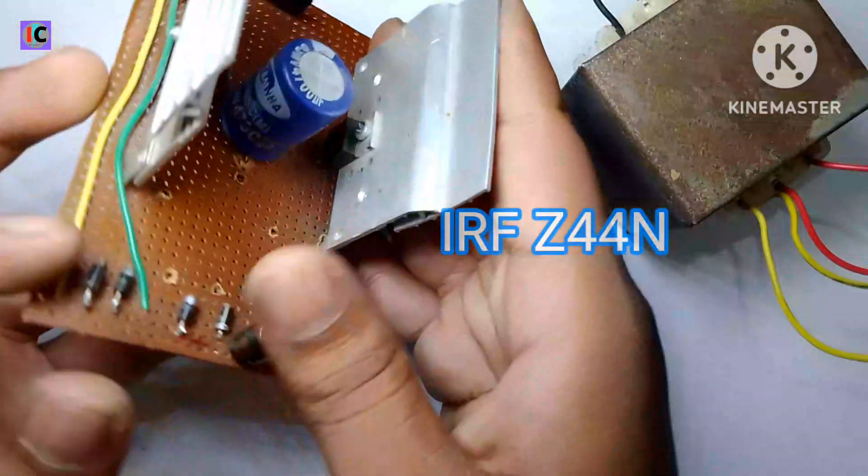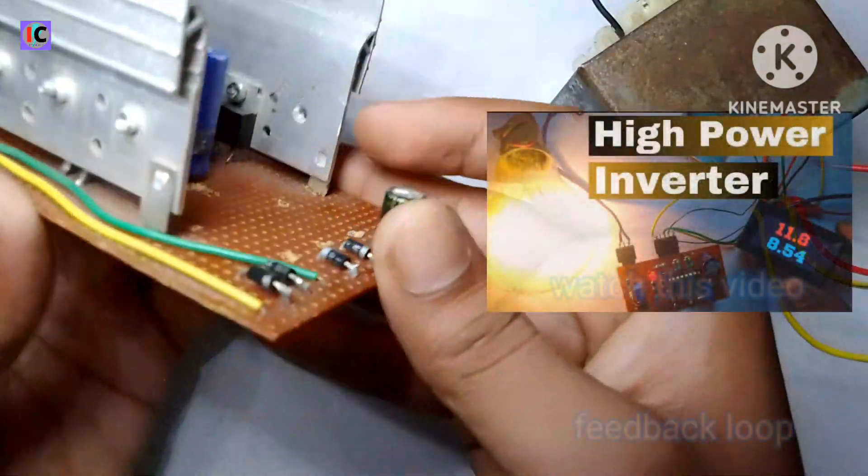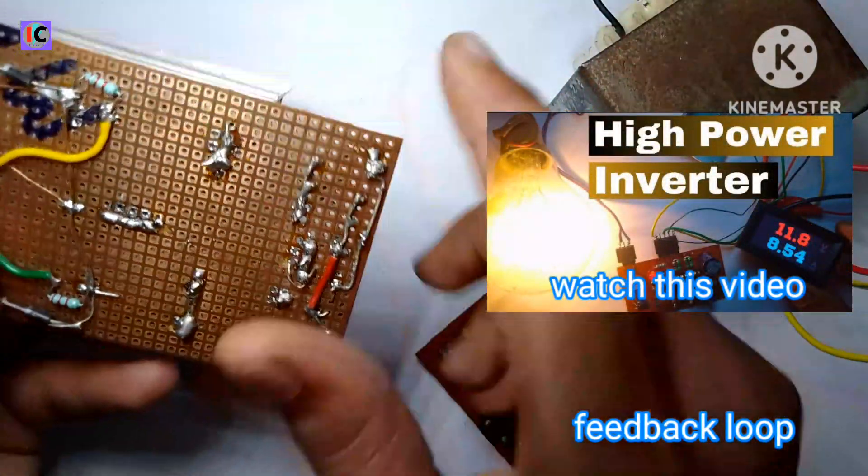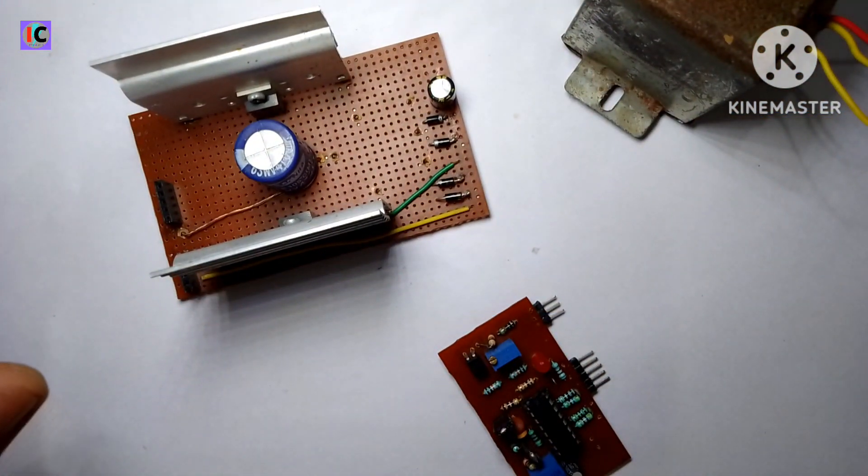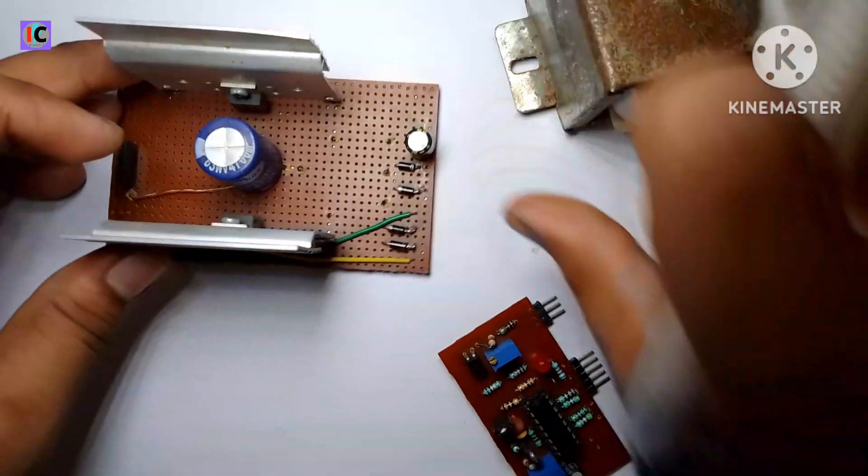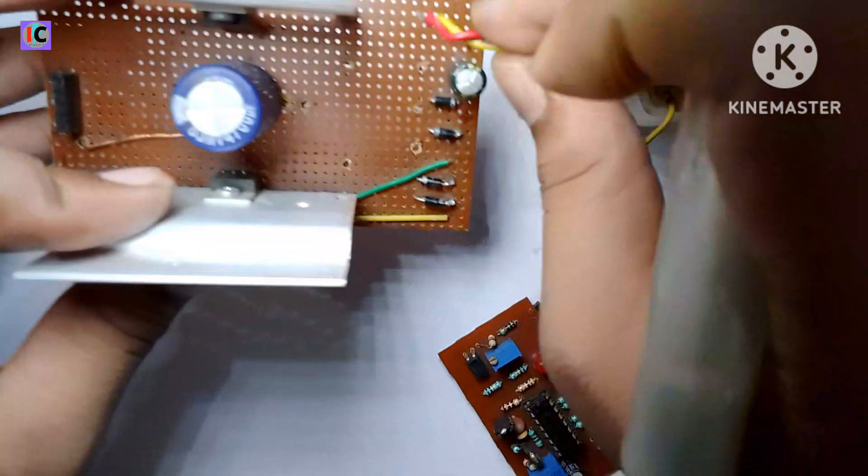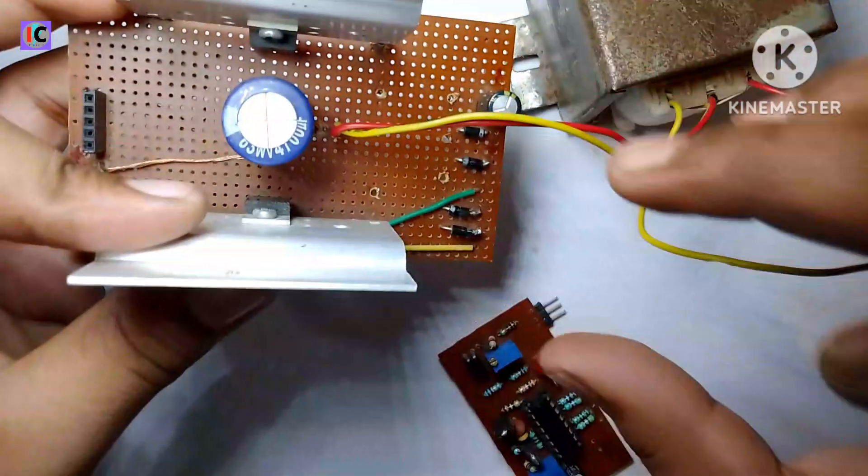This board I used in my previous video which was made on DC converter, and now I am going to use this for making my low frequency inverter. For this, we have to connect the transformer secondary coil.